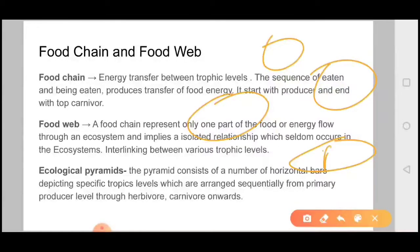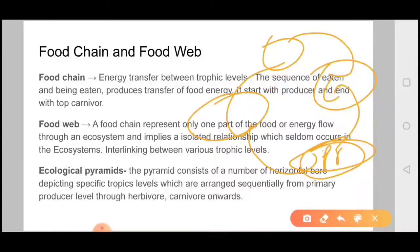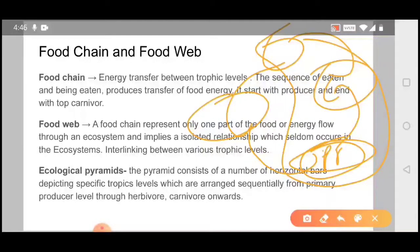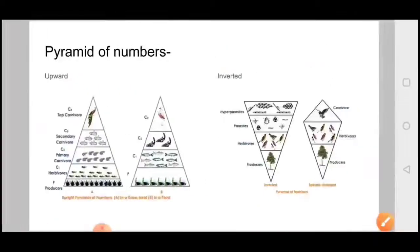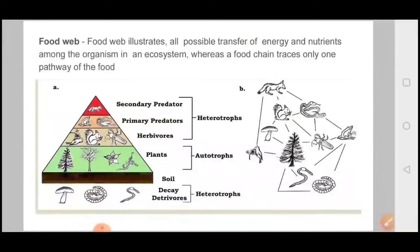We can understand the food web like this: here is a producer, then a primary consumer, then a secondary consumer — but from the same primary producer you can take another path. So when you have multiple pathways forming a web, we call it a food web. A food chain represents only one part of the food or energy flow through an ecosystem and implies an isolated relationship which seldom occurs.